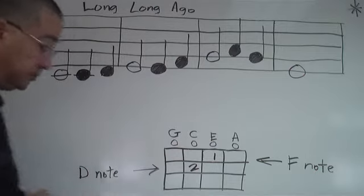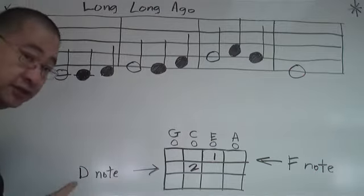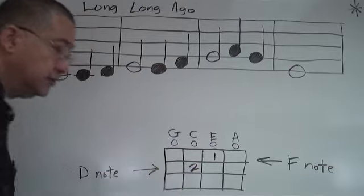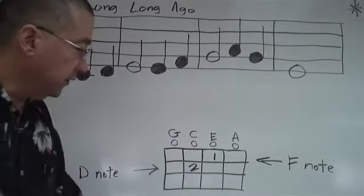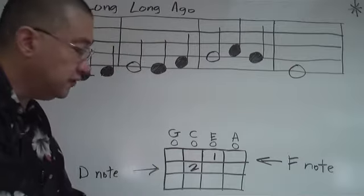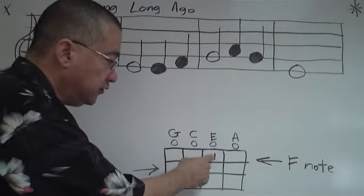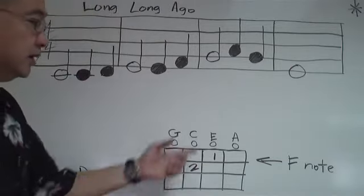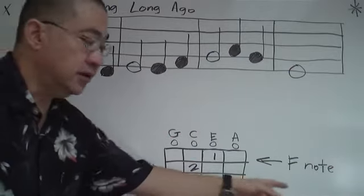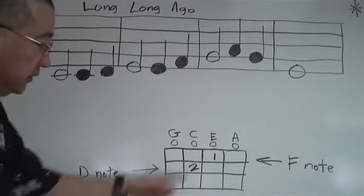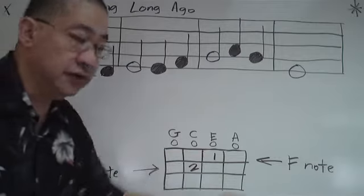So D comes after C in letter notation, this is your D note. Second finger pressing on the second fret, that's your D note. You see a number one here, that's your first finger pressing on the first fret. What comes after E, it's your F note, same thing as the alphabet. So that's your first finger, F note.